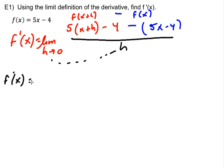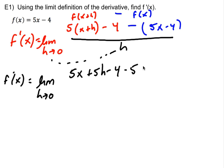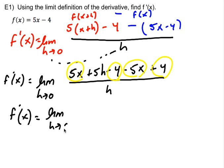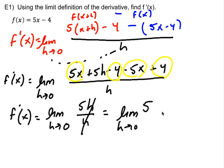I can't plug in because h would be 0, giving 0 over 0, so I need to simplify. Distributing gives 5x plus 5h minus 4, and distributing the negative gives minus 5x plus 4. The terms without h sum to 0 — the 5x and negative 5x cancel, the negative 4 and positive 4 cancel — leaving just 5h over h, which is 5. So f prime of x equals 5.